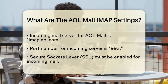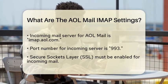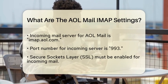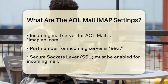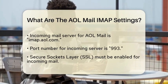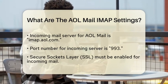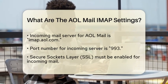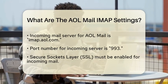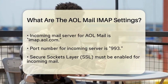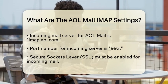First, let's look at the incoming mail server settings. For AOL Mail, the server name is imap.aol.com. The port number you will use is 993, and it is essential to enable Secure Sockets Layer, often referred to as SSL, for a secure connection.